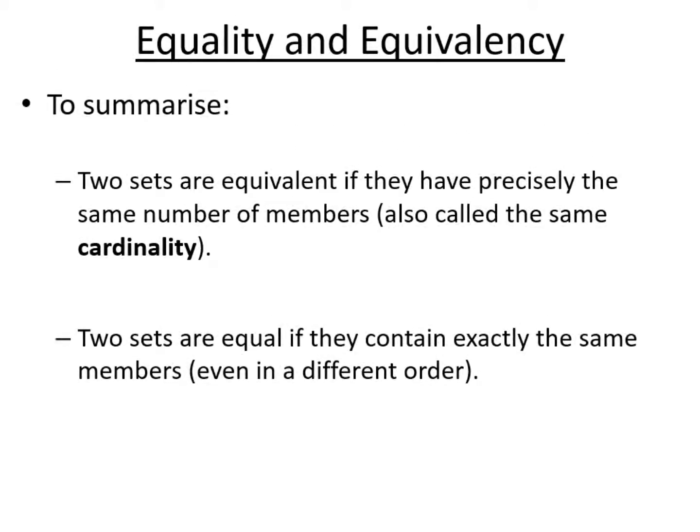To summarize that idea, two sets are equivalent if they have precisely the same number of members, in other words if they have the same cardinality. On the other hand two sets are equal if they contain exactly the same members even if the members are in a different order.